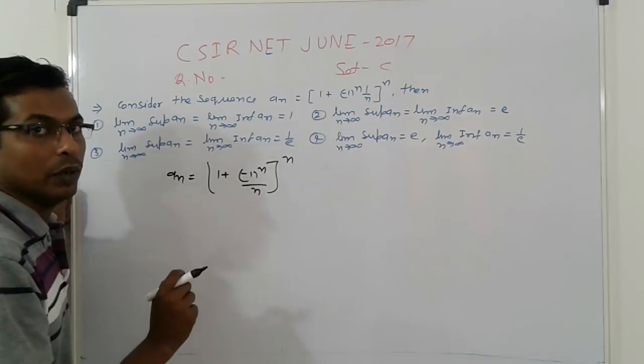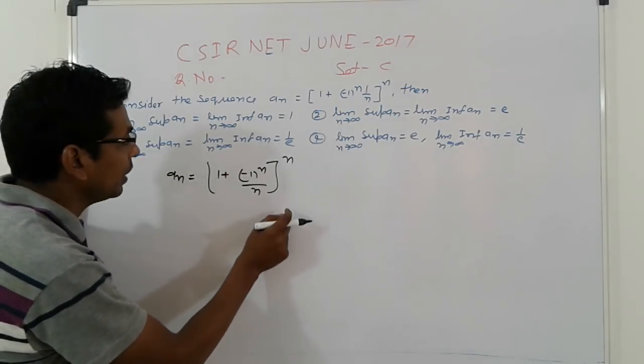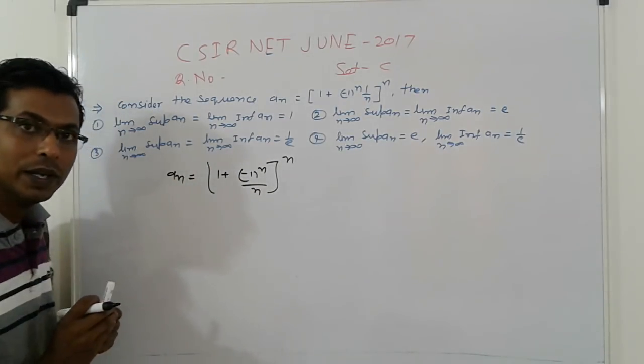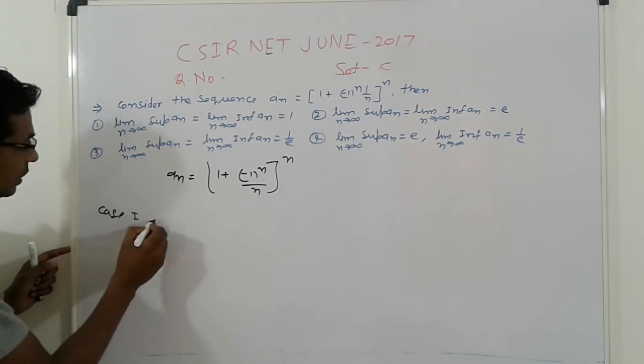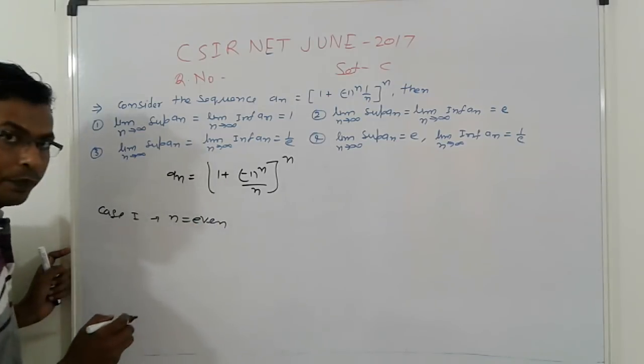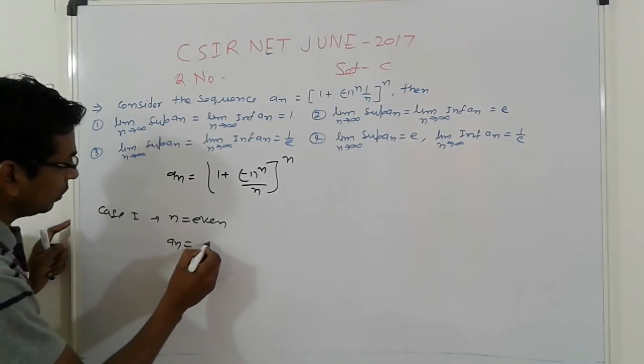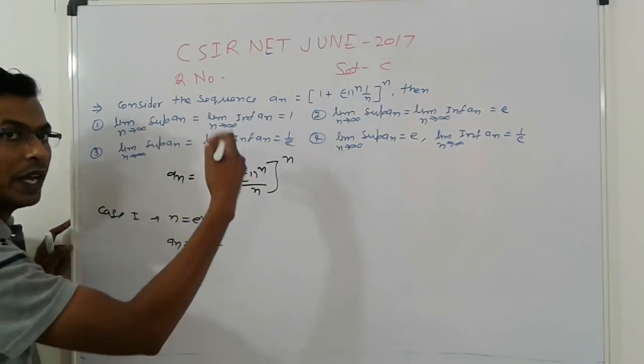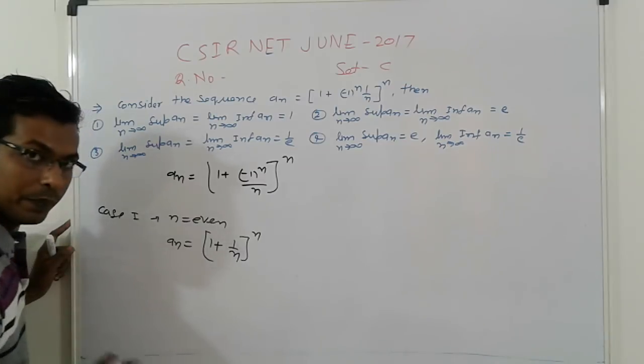So first we will check what is the value of An. And when n is even, what is the value of An? There are two categories. First, this is case 1: n equal to even. So n equal to even, what is An? 1 plus (1/n) raised to power n, because every time we get the positive, which equals e.